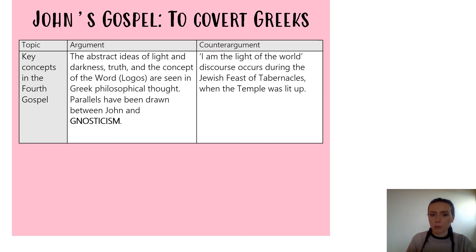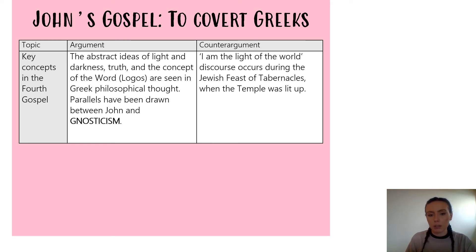Now we're going to look at whether John's Gospel was trying to convert Gentiles — those who were not Jewish — and first we'll look at whether John was trying to convert Greeks. One key topic is the key concepts John uses. An argument to support the idea that John's Gospel was trying to convert Greeks is that he uses abstract ideas familiar to a Greek audience: light, darkness, and logos are all terms known in Greek philosophical thought. You can link this to topic 2.1 and explore the influence of Hellenism or Gnosticism — supporting the idea that John is using concepts a Greek reader may encounter and understand, making their own connections.